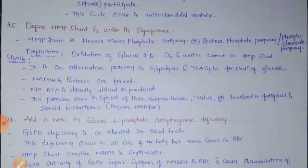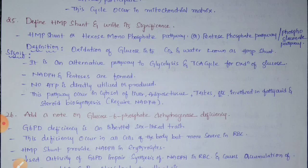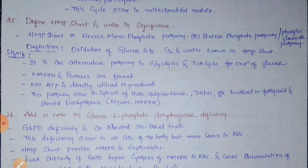Define HMP shunt and write its significance. HMP shunt, or hexose monophosphate pathway, is also known as the pentose phosphate pathway or pentogluconate pathway. It can be defined as the oxidation of glucose into carbon dioxide and water. It is an alternative pathway to glycolysis and Krebs cycle for oxidation of glucose. In this pathway, NADPH and pentose molecules are formed, and no ATP is directly utilized or produced.